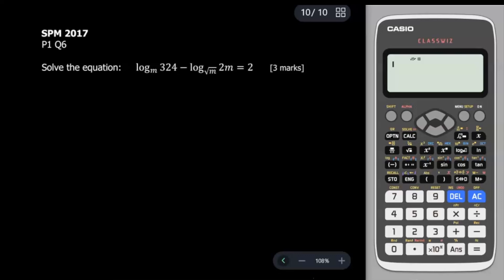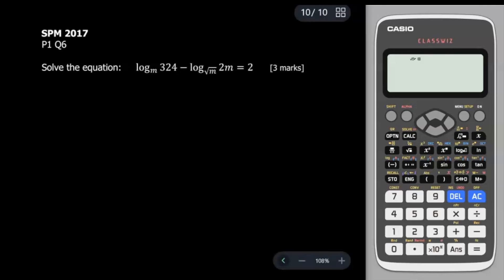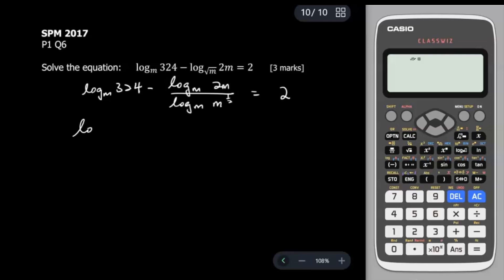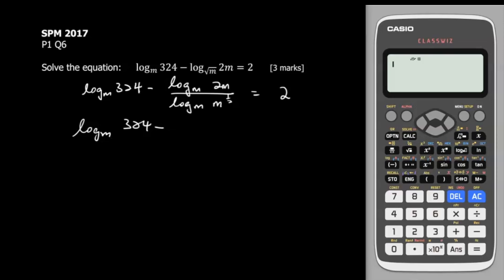This question is from SPM 2017 Paper 1, Question 6 — 3 marks. We look at the base: we have log base m and the third root of m, so I'll change everything to log base m. This becomes log base m of 324 minus log base m divided by log base m, with 2m on top and m^(1/2) at the bottom. Since log base m of m^(1/2) equals 1/2, the bottom becomes 1/2.